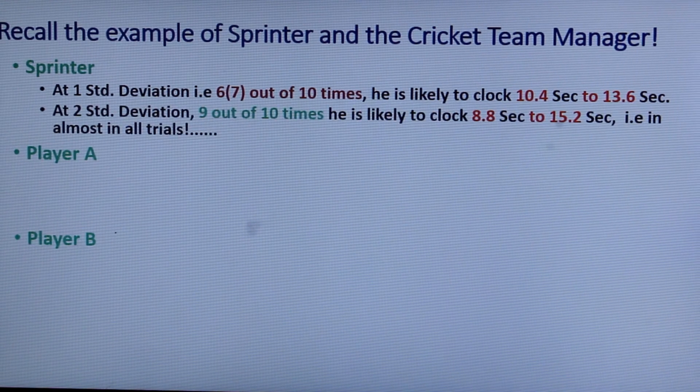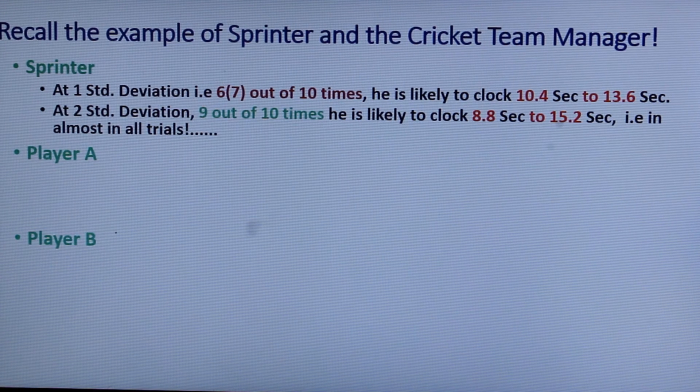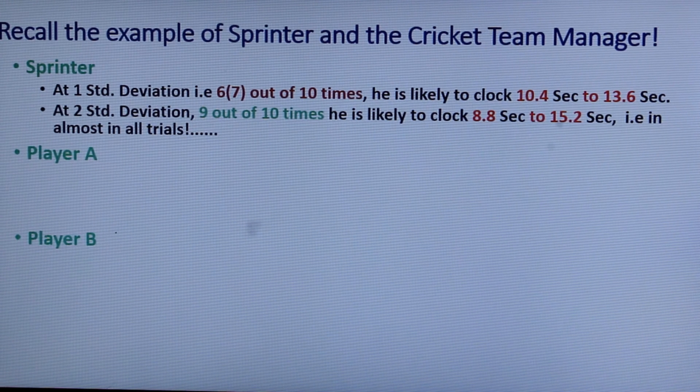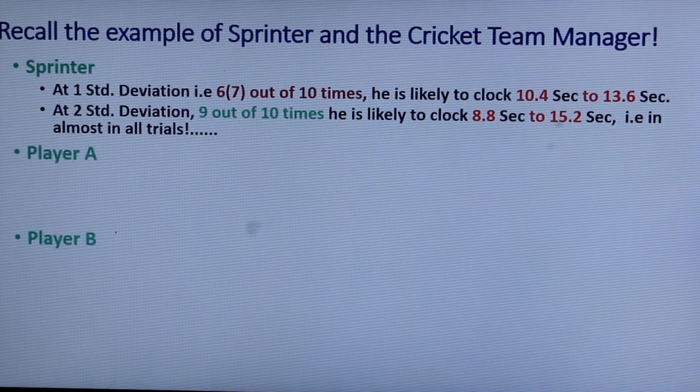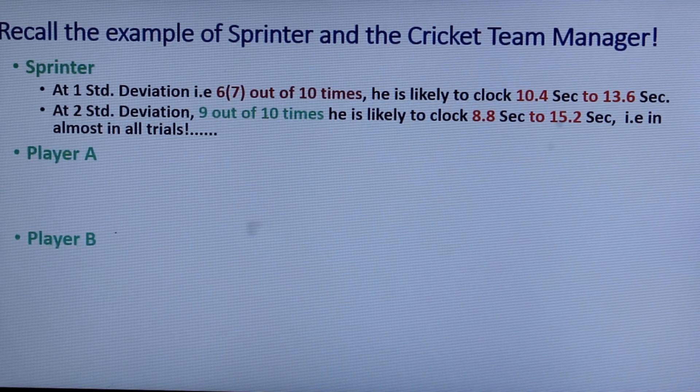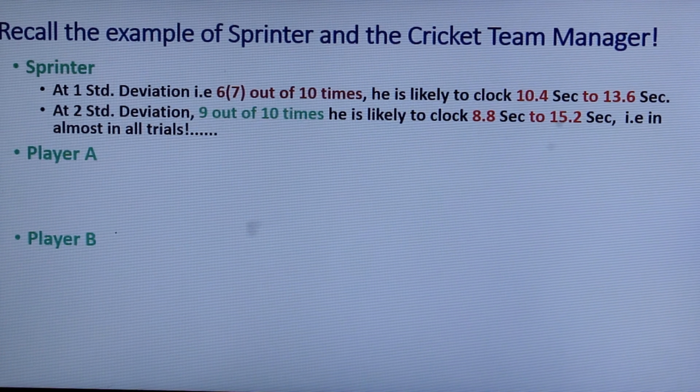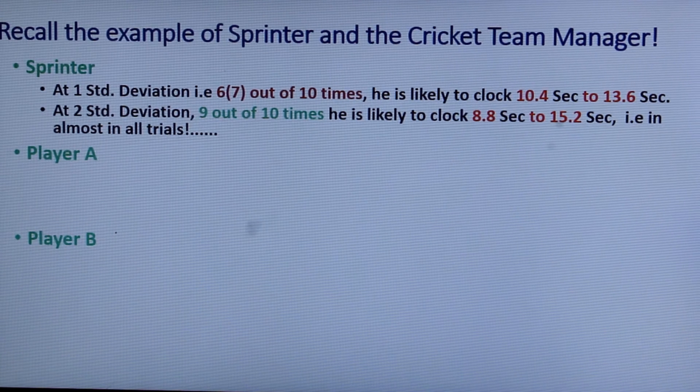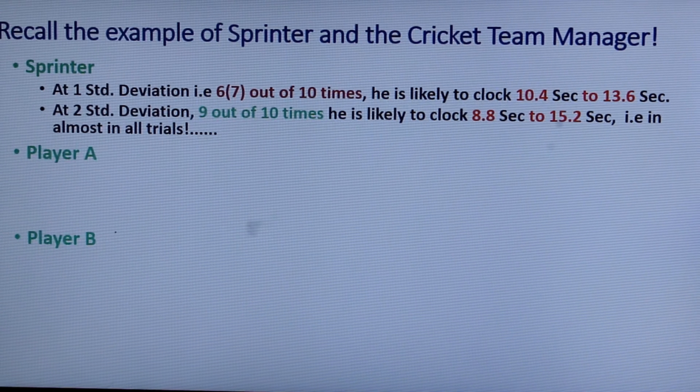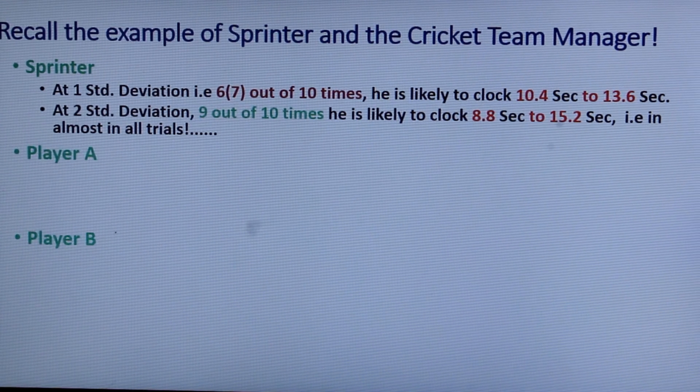With two standard deviation out of 10 times, he will clock anywhere between 8.8 seconds to 15.2 seconds in nine times. That means 9 out of 10 times he is likely to clock between 8.8 seconds to 15.2 seconds.